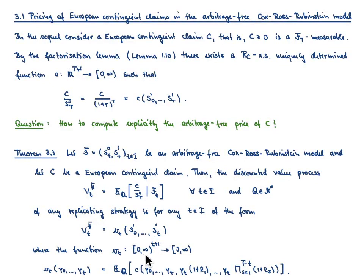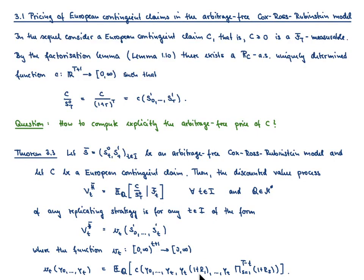Moreover, this random variable V̄^h(t) can be written as a function little v_t depending on the random variables S_1^0 up to S_1^t. This function v_t maps (0,∞)^{t+1} to the non-negative reals and is explicitly given by the formula: v_t(y_0,...,y_t) is the expected value under Q of the function c where we plug in y_0 up to y_t, and from component t+1 on we plug in y_t times (1+r_1) up to y_t times the product from s=1 to T−t of (1+r_s), taking the expectation over the random variables r_1 up to r_{T−t}.